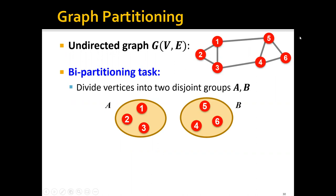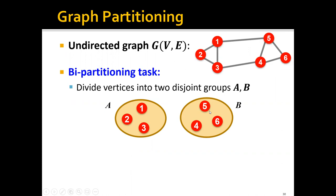For example, in this graph, one partitioning may divide this graph into two groups A and B where nodes 1, 2, 3 are in group A and nodes 4, 5, and 6 are in group B.